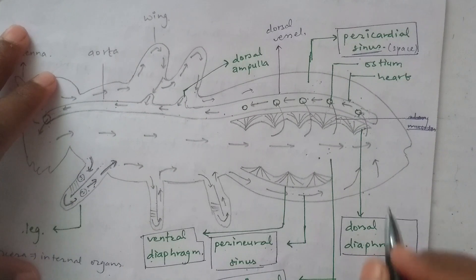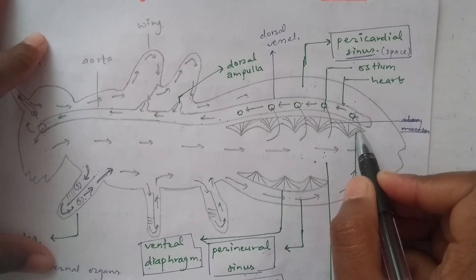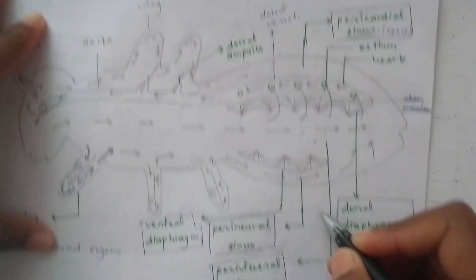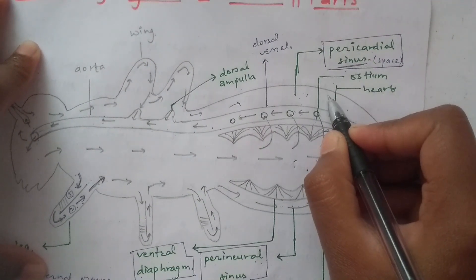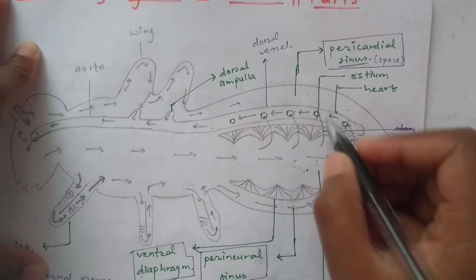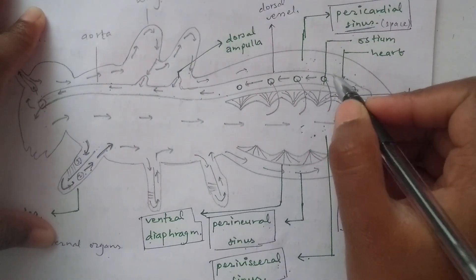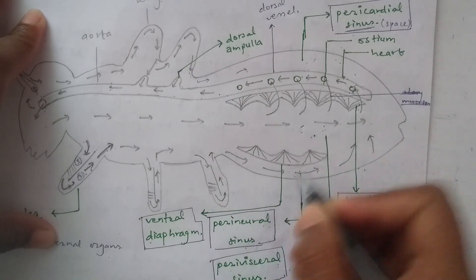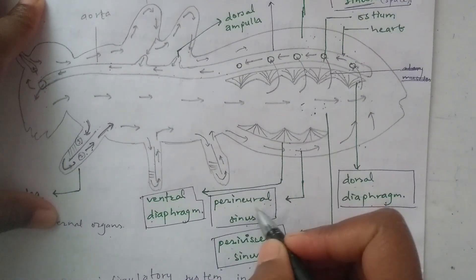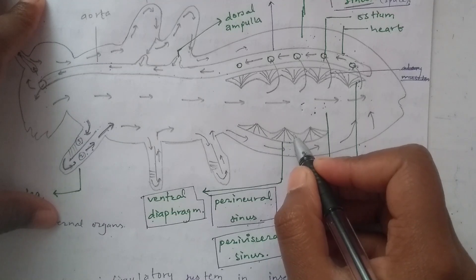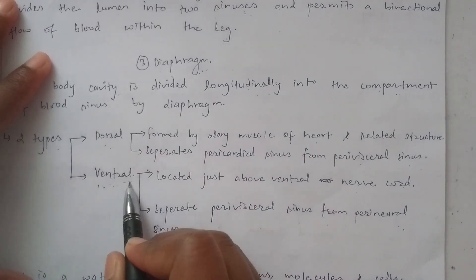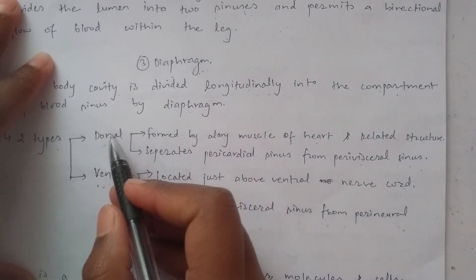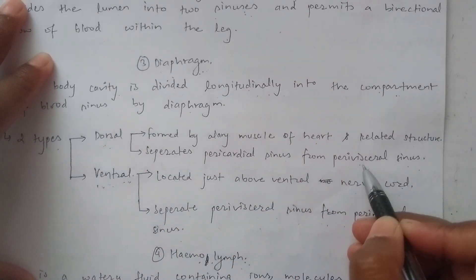The two diaphragms divide the body cavity into three sinuses: the peribisceral sinus and the pericardial sinus are separated by the dorsal diaphragm, while the ventral diaphragm separates the peribisceral sinus from the perineural sinus.